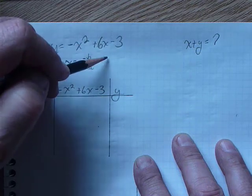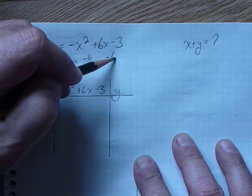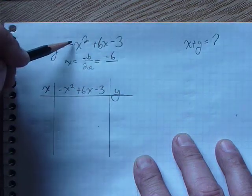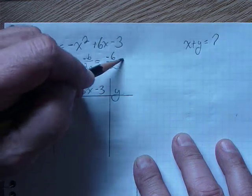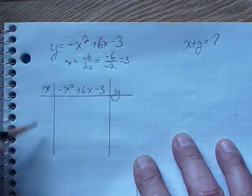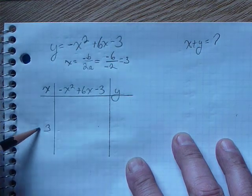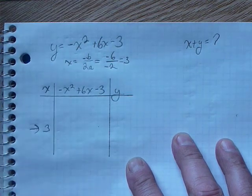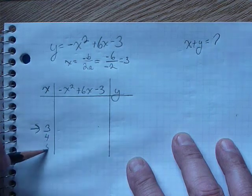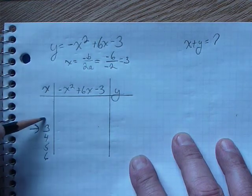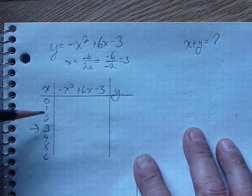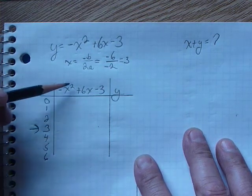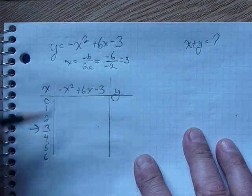And b is 6, so minus b is minus 6. a is minus 1, so 2 times minus 1 is minus 2. So therefore, this is positive 3. So that is our middle point, and I always put an arrow there. And then we go 4, 5, 6. We go 3 above and 3 below. So now, what we do is we take these values of x, we plug them into the equation to find our y.